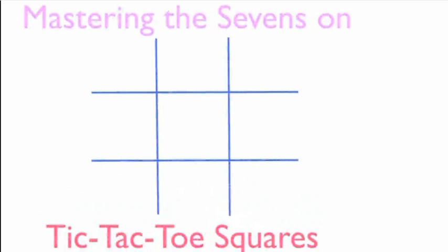I have just taken one tic-tac-toe square to master the 7s on. That is from 1 to 0. I have taken the numbers 1, 2, 3, 4, 5, 6, 7, 8, 9 and 0. I am going to arrange it in such a way that brings the tables of 7. Let us see how to do it.